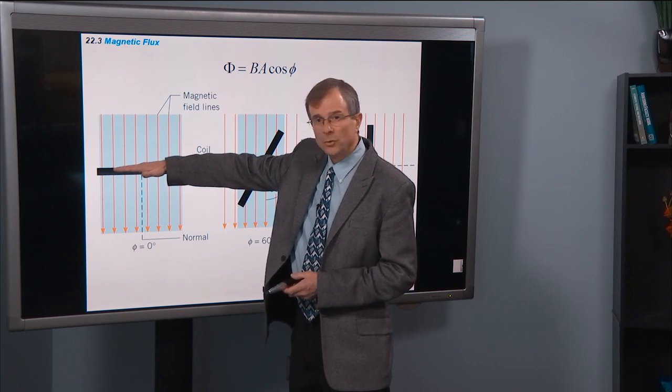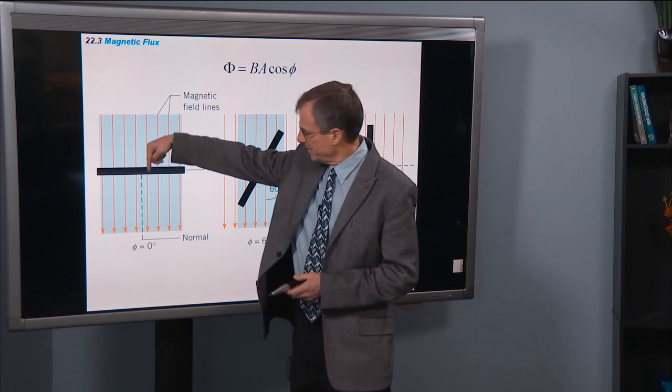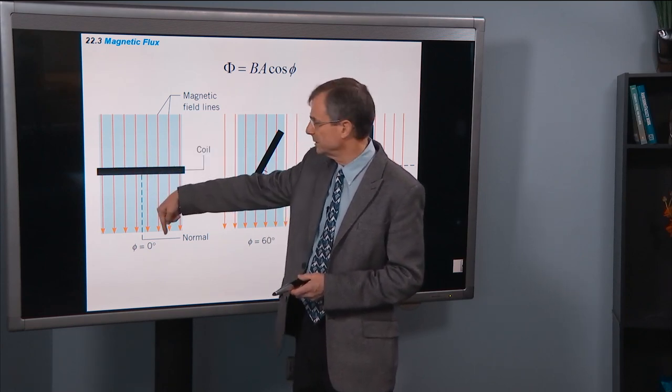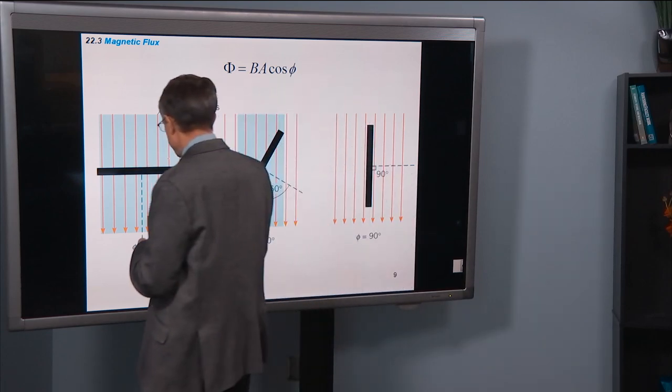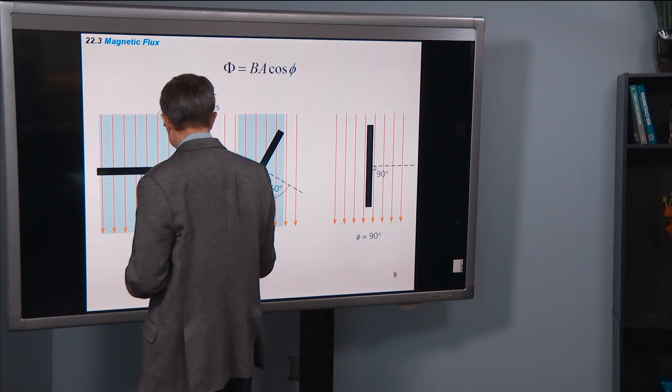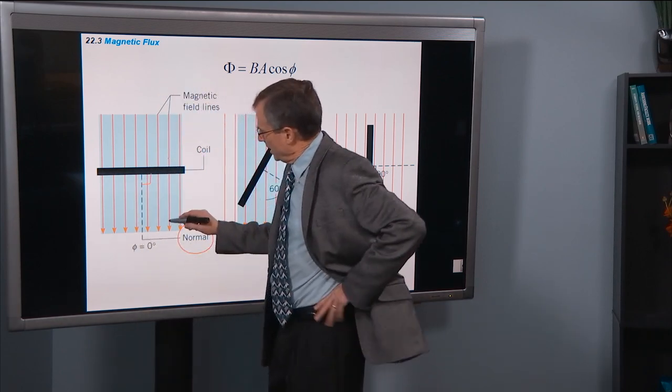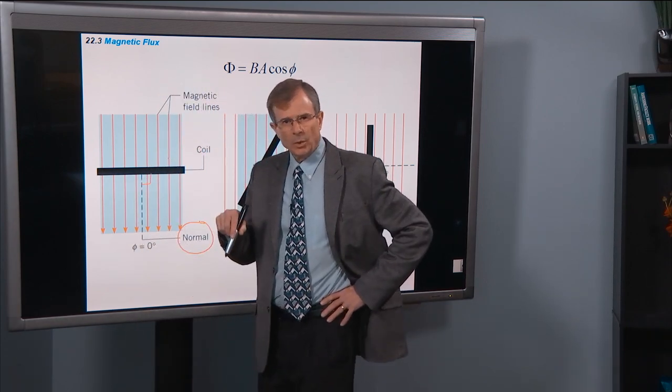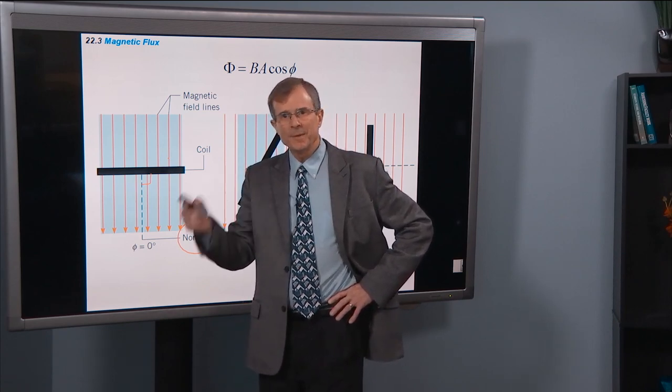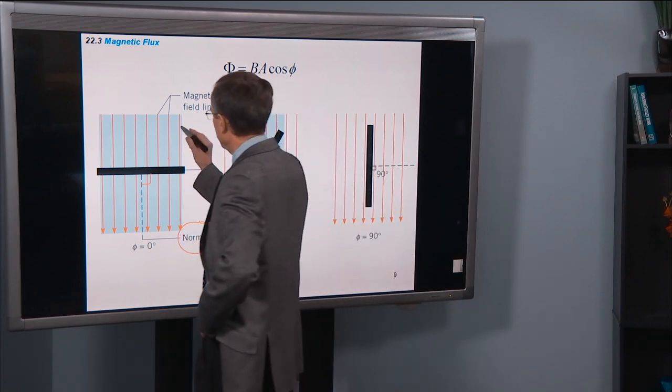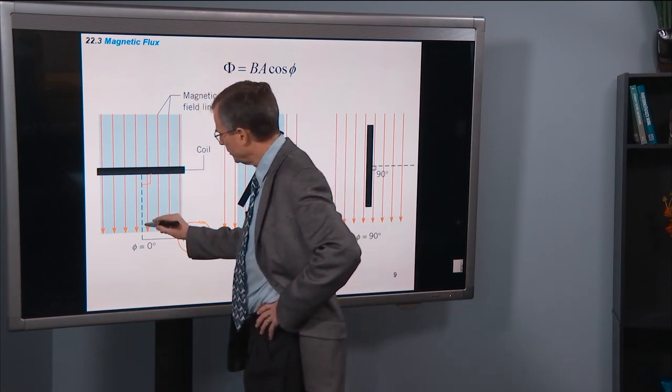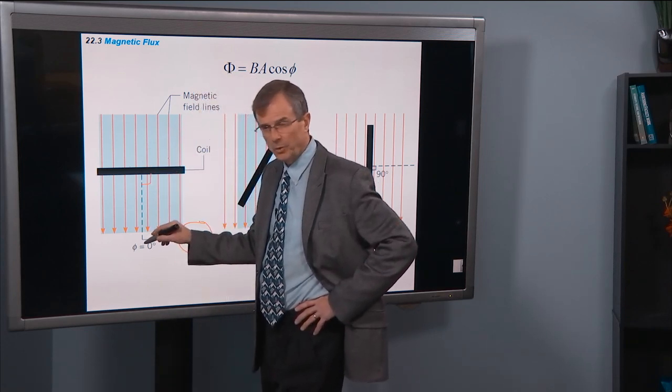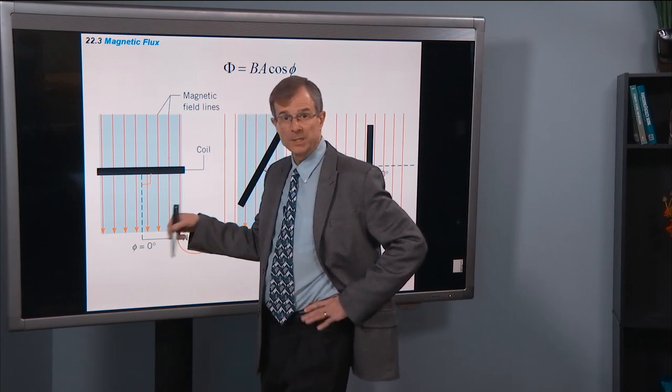So in this case, the normal to the surface is that direction. And perpendicular to the surface, this is a normal direction. And in that case, the angle between the normal and the magnetic field, magnetic field lines are denoted by red arrows here, the angle between this dotted normal and these magnetic field lines is zero.